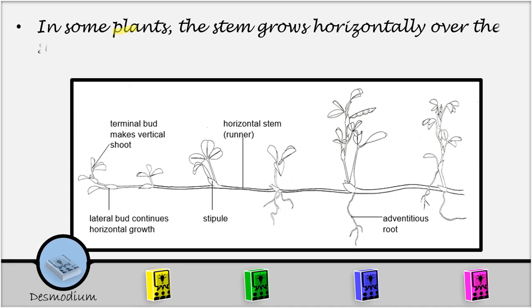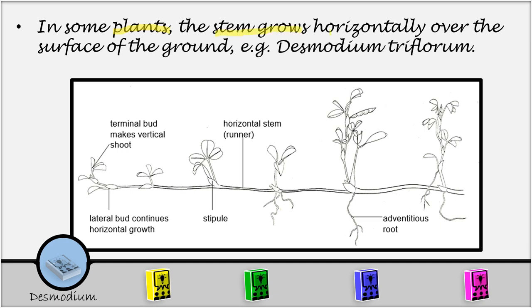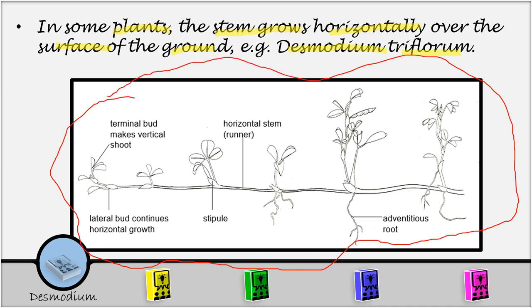In some plants, the stem grows horizontally over the surface of the ground. For example, Desmodium triflorum. So here we are looking at our Desmodium. This is our Desmodium plant, and it is a runner. Runners grow horizontally on the surface of the ground. The stems will grow on the surface of the ground.